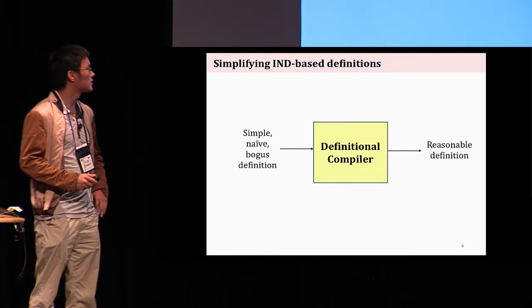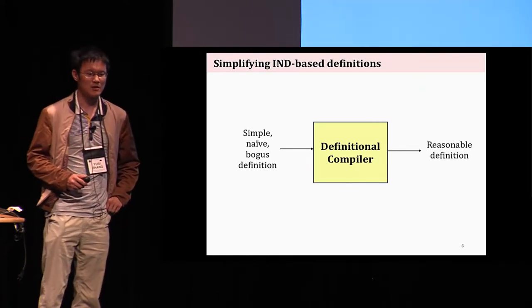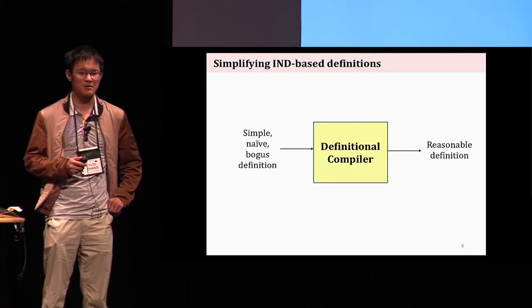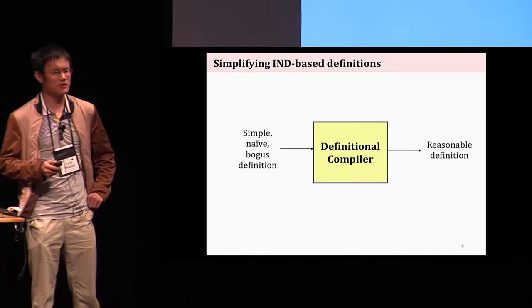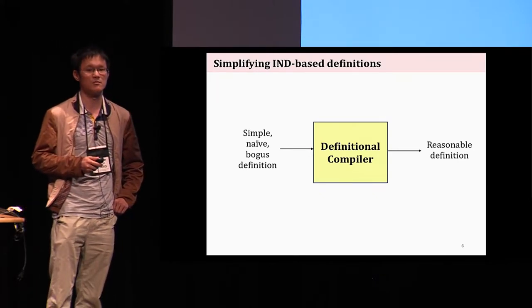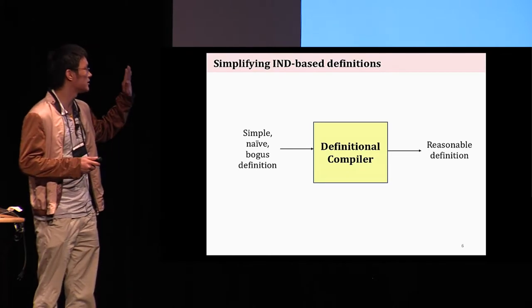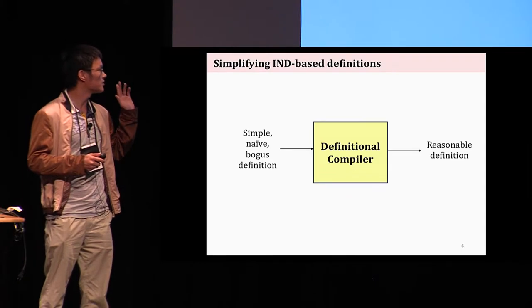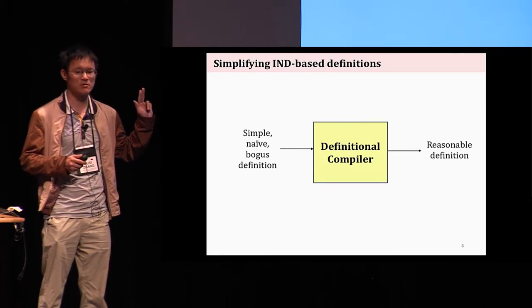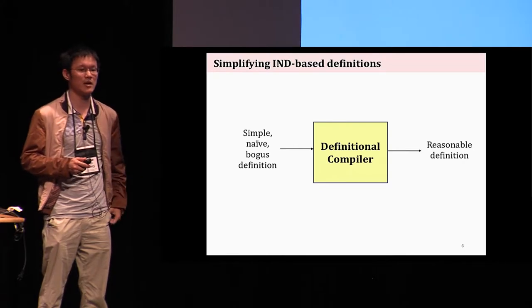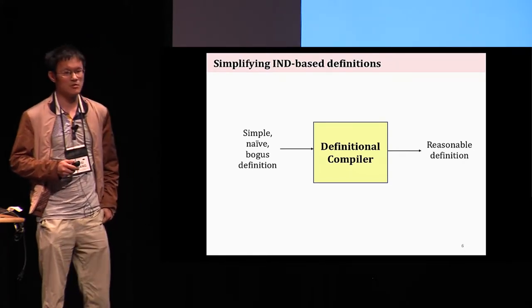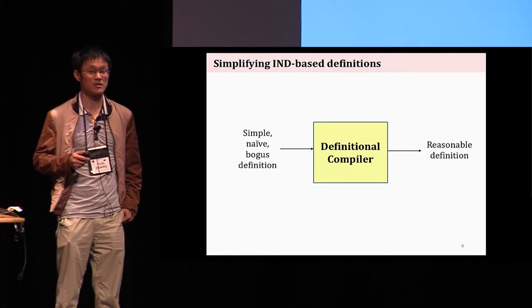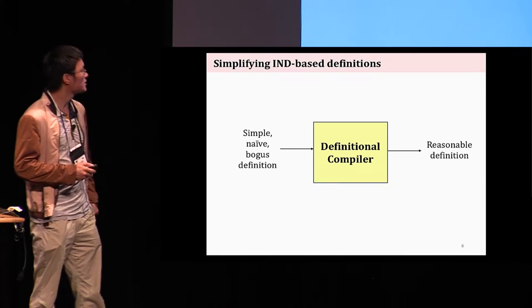So our INDIC framework is supposed to fill in this gap. In a high level, it works like a definition compiler where you feed into this compiler two security games that capture what you want, but really do not work because there will be trivial winning strategy for the adversary. So the definition on the left-hand side is bogus. However you live with that, you pass these security games to the compiler and it will automatically generate two edited games for you whose IND advantage results in a relevant reasonable security notion in which there's no trivial win.